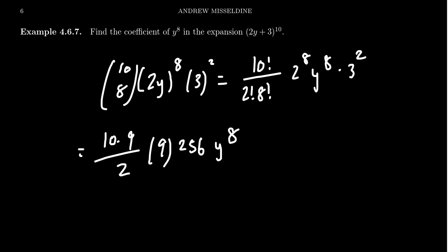Let's simplify where we can. 2 goes into 256, leaving 128 behind. Taking 10 times 128 gives 1,280 times 81 times y^8.